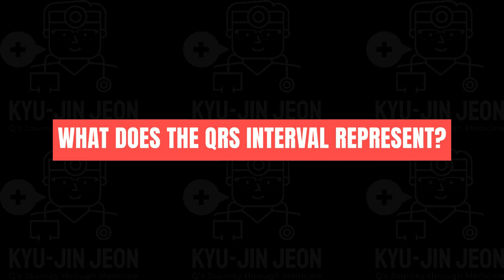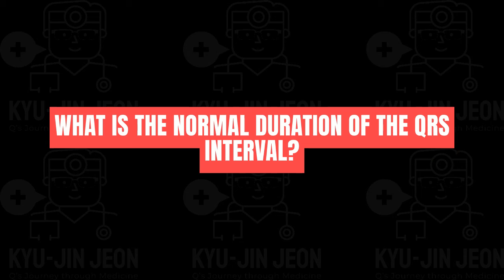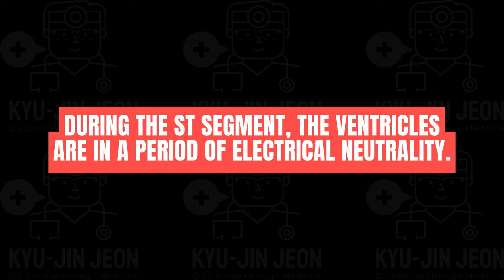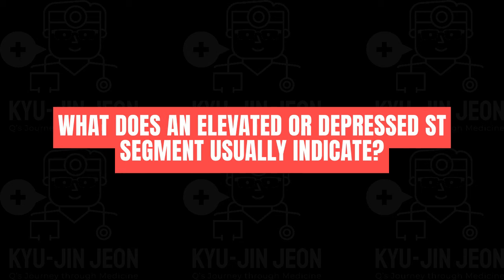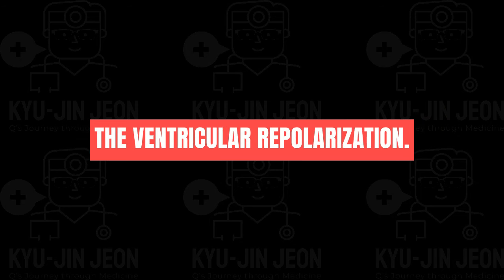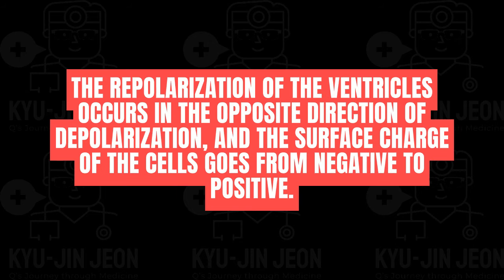The PR interval shortens when heart rate increases and lengthens when heart rate decreases. A PR interval greater than 0.2 seconds usually indicates a conduction block in the AV node or bundle of His. The QRS interval represents the time required for ventricular depolarization, with a normal duration of less than 0.1 seconds. During the ST segment, the ventricles are in a period of electrical neutrality; an elevated or depressed ST segment usually indicates an ischemic event.